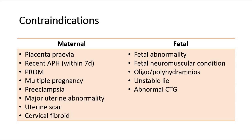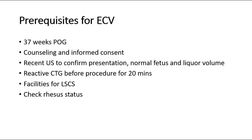These are the prerequisites for external cephalic version. The baby must be at least 37 weeks period of gestation. Counselling and informed consent must be obtained from the mother. A recent ultrasound is needed to confirm the breech presentation and that the fetus is normal, with normal liquor volume — as it is contraindicated in oligo- or polyhydramnios. Ensure a reactive CTG for 20 minutes before ECV. Prepare facilities for caesarean section in case of failed ECV, and check the rhesus status of the mother.